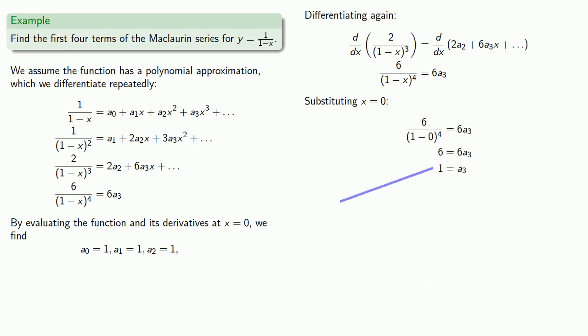And so by evaluating the function and its derivatives at x equals 0, we find the values of the coefficients a₀, a₁, a₂, and a₃. And so we can write down the first four terms of the Maclaurin series for 1 over 1 minus x.